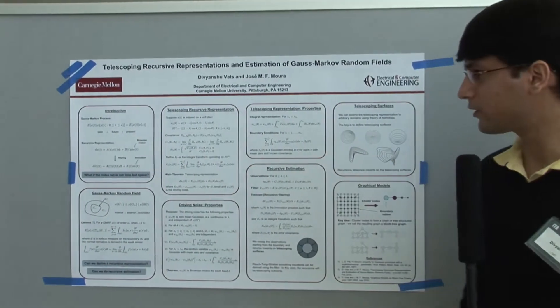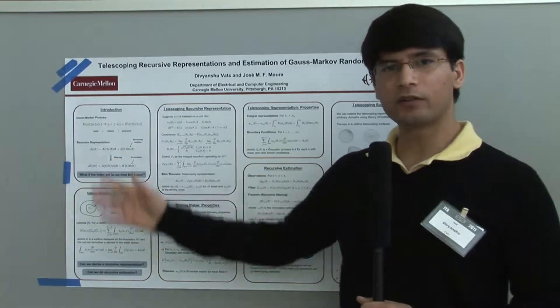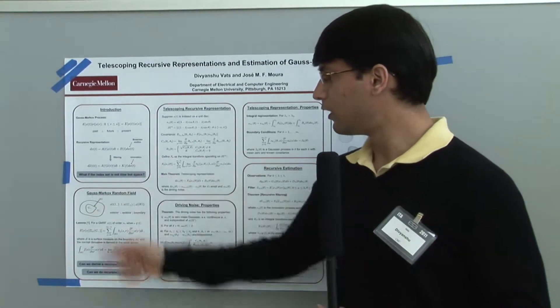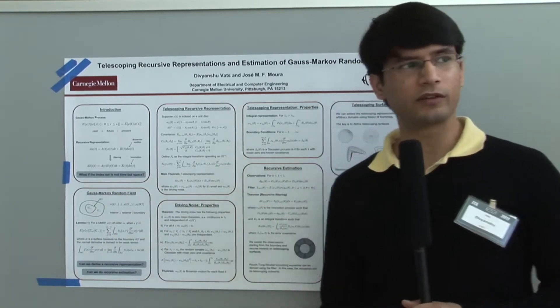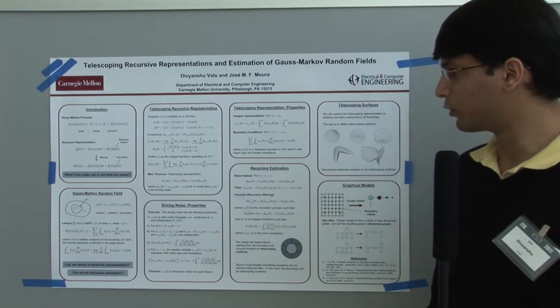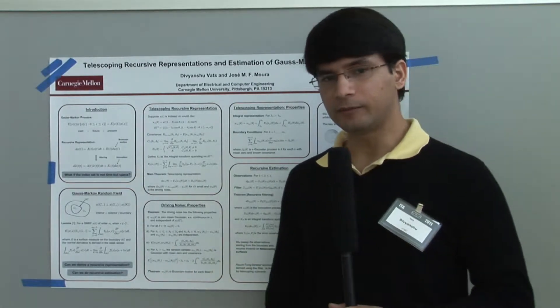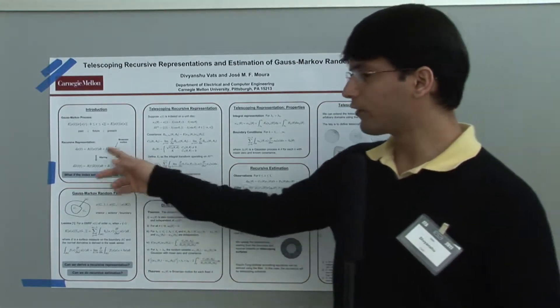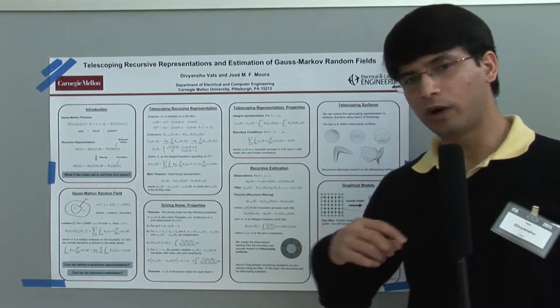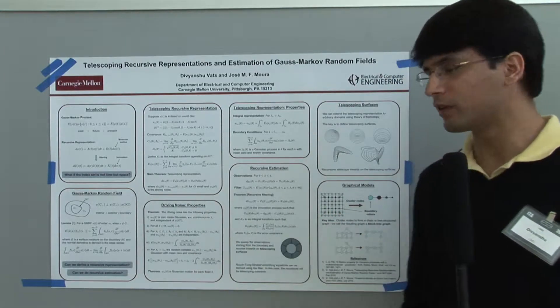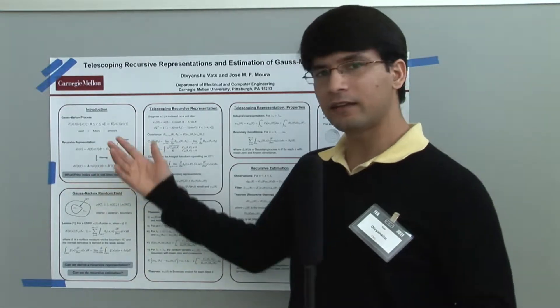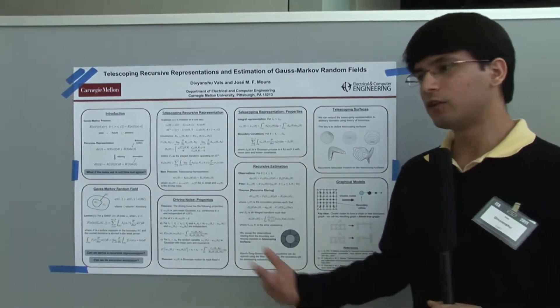Brownian motion or white noise. Given this recursive representation, you can derive recursive filtering equations like the Kalman filter and various recursive smoothers. The basic theme of my research is: what if the index set is not 1D but higher dimensional? Can we extend these recursive representations to higher dimensions?